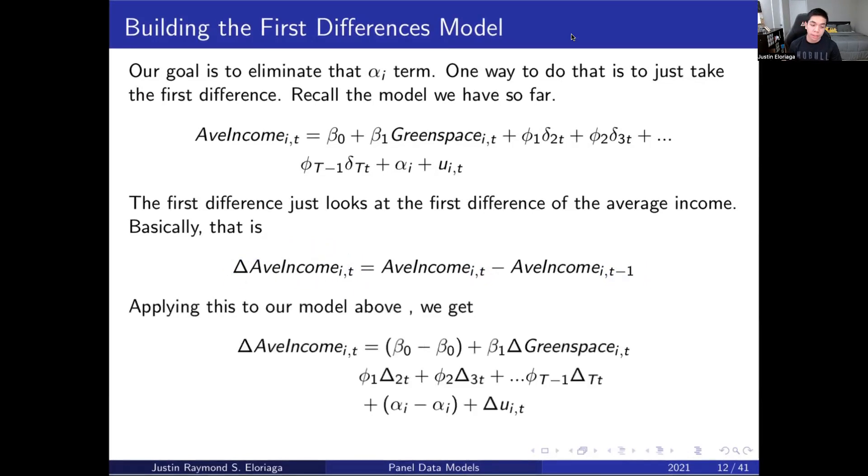So if we do that and we do our model with that, we notice we're going to get a lot of difference terms here. But the key point I want to point out is what happens here is this alpha_i term, because it's not a function of t, will go away.